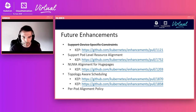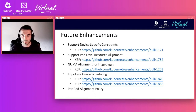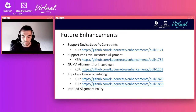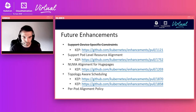Per-pod alignment policy: currently the Topology Manager policy is statically configured at node level at Kubelet startup time. This enhancement would allow users to specify a policy in the pod spec for a particular pod. This would require an API change, which is challenging. While it has been discussed, there are no official plans or KEP as of now.